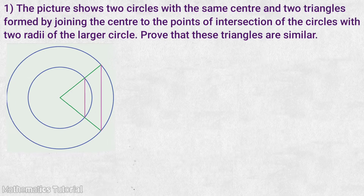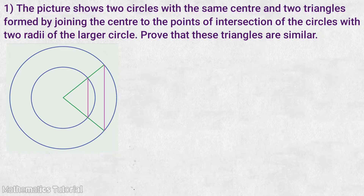The picture shows two circles with the same center and two triangles formed by joining the center to the points of intersection of the circles with two radii of the larger circle. Prove that these triangles are similar.